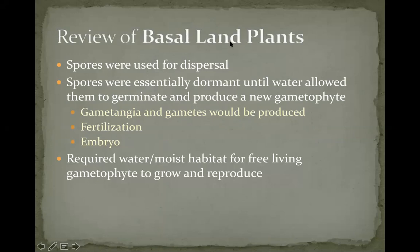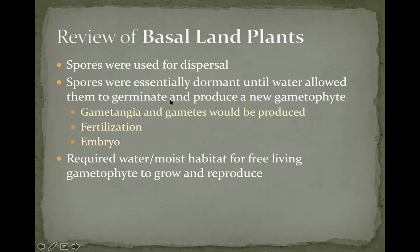Just a quick review of basal land plants, which is what you guys have been talking about for the past two weeks. The basal land plants include the non-vascular land plants as well as the seedless vascular land plants. Seedless vascular would have been the Lycopodiophyta and the Monilophyta, and the non-vascular land plants would have been your liverworts and mosses. Together they make up the basal land plants, and they completed their life cycle through spores. The spores were basically dormant until they landed in some kind of body of water or moist environment, allowing them to germinate and produce a brand new gametophyte.